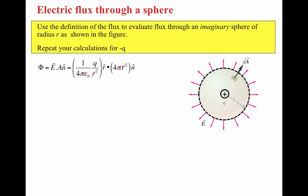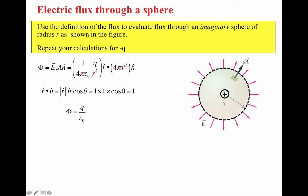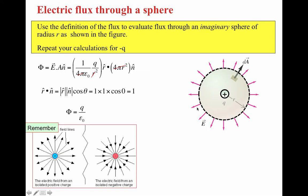The 4π cancels with 4π and R² cancels with R², and R-hat dotted with N-hat equals 1 because the angle between them at any point is 0 and cosine(0) = 1. Putting all that together, the electric flux Φ is nothing more than Q, the enclosed charge inside the sphere, divided by ε₀, the permittivity constant for free space.